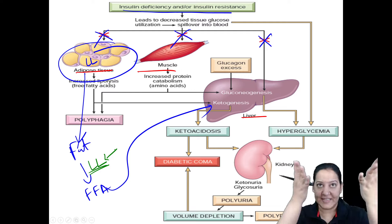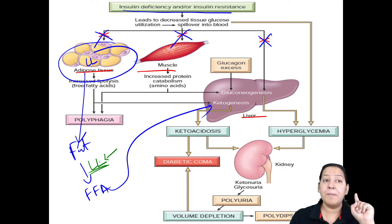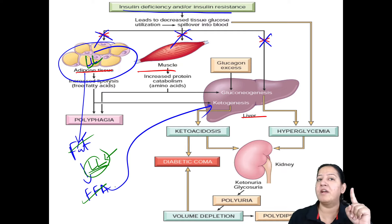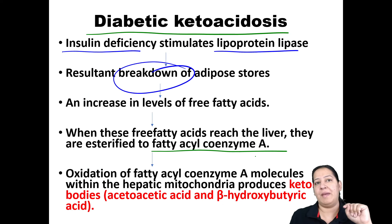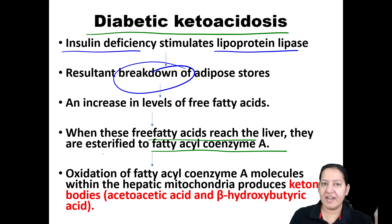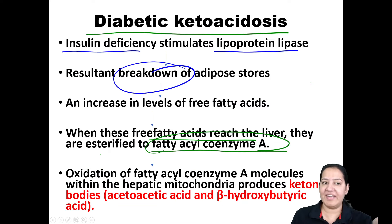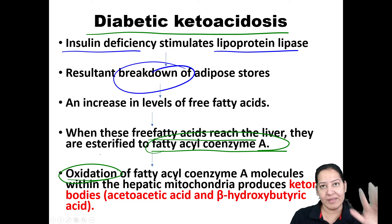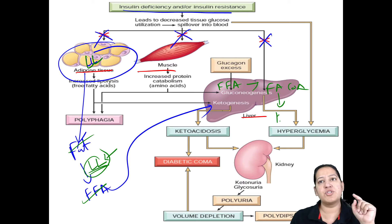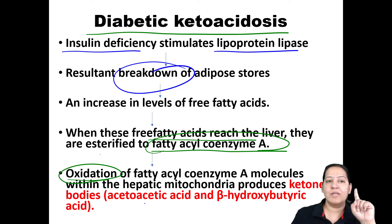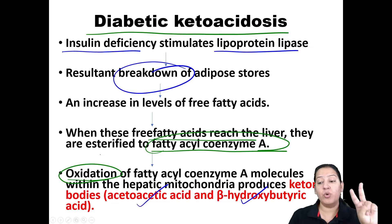In the liver, free fatty acids are esterified to fatty acyl coenzyme A. This fatty acyl CoA undergoes oxidation to form ketone bodies. Three ketone bodies are produced, but mainly two: acetoacetic acid and beta-hydroxybutyric acid. These two ketone bodies are produced in the liver and come into the blood.